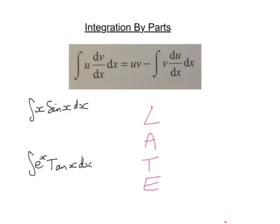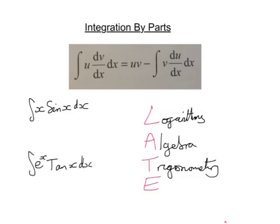But the straightforward version is L for logarithms, A for algebra, T for trigonometry, and E for exponentials.